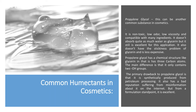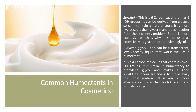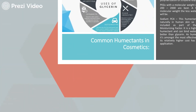Propylene glycol has a chemical structure similar to glycerin in that it has three carbon atoms. It doesn't absorb quite as much moisture as glycerin, but is again excellent for this application because it does not carry the stickiness associated with glycerin. The primary drawback of propylene glycol is that it is synthesized and produced from petroleum processing, and it also has a bad reputation from misinformation about it. Another humectant is sorbitol — derived from glucose, so it maintains a natural story. It is more hygroscopic than glycerin and doesn't suffer from the stickiness problem, but it is more expensive, which is why it is not used as extensively. Then next is butylene glycol — a transparent, low viscosity liquid that works well as a humectant, similar in humectancy to propylene glycol and makes a good substitute.